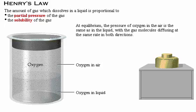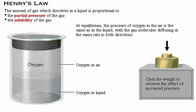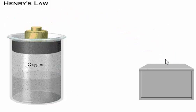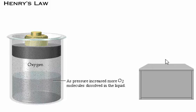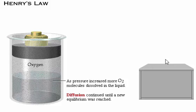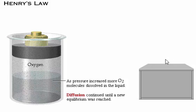What do you think will happen if you increase the pressure in the container? Click the weight to observe the effect of increased pressure. Notice that as the pressure increased, more oxygen molecules dissolved in the liquid, moving from a region of high pressure to a region of low pressure. Diffusion continued until a new equilibrium was reached. This is what happens when oxygen moves from the alveoli into the blood.